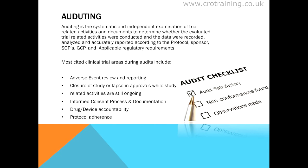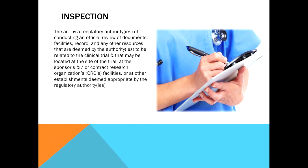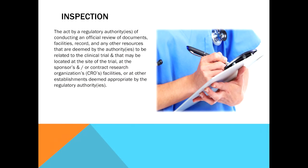Now we will define inspection and explain the main differences between inspection and audit. An inspection is the act by a regulatory authority of conducting an official review of documents, facilities, records, and any other resources deemed related to the clinical trial — which may be located at the site of the trial, at the sponsor's and/or CRO's facilities, or at other establishments deemed appropriate by the regulatory authorities.